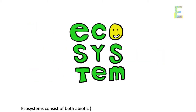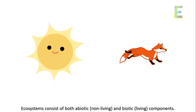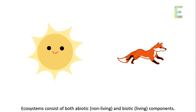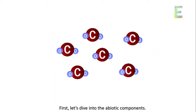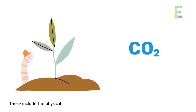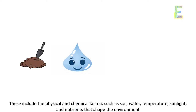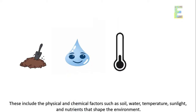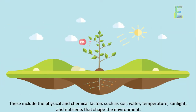Ecosystems consist of both abiotic and biotic components. First, let's dive into the abiotic components. These include the physical and chemical factors such as soil, water, temperature, sunlight, and nutrients that shape the environment.